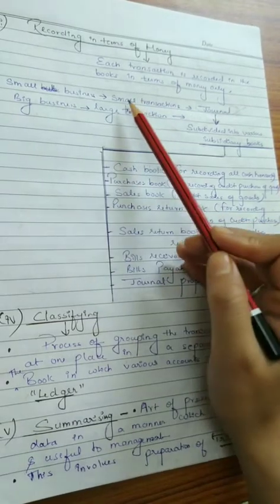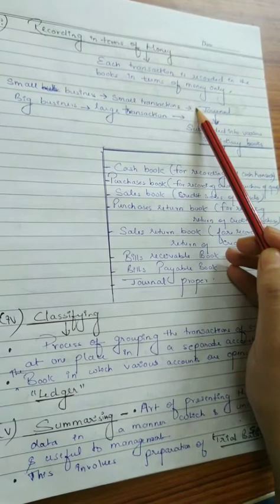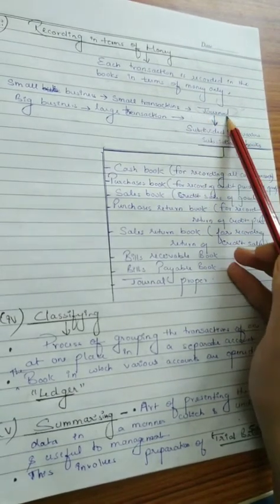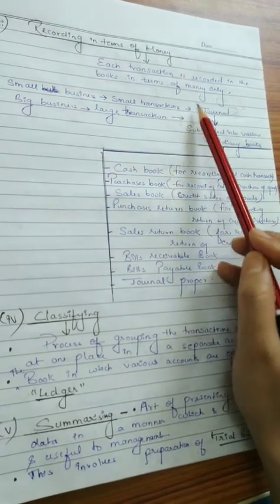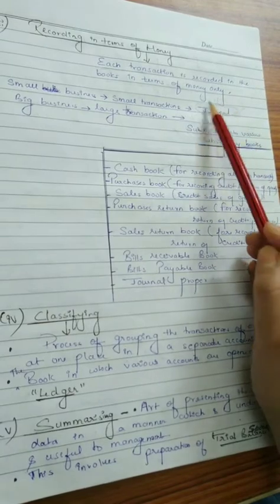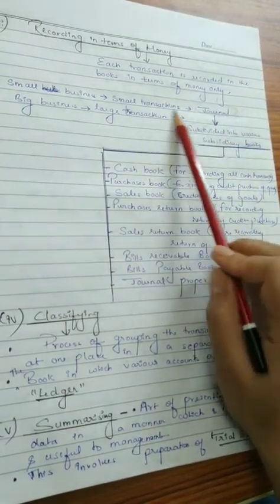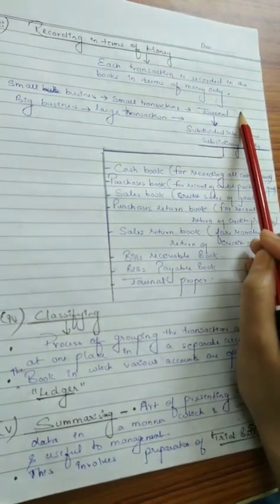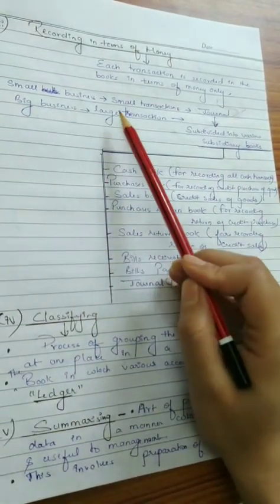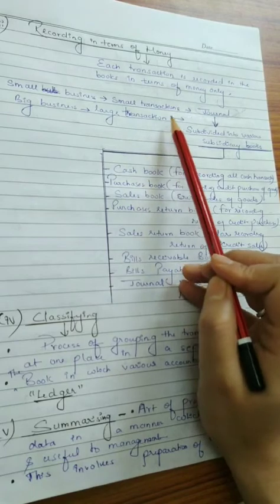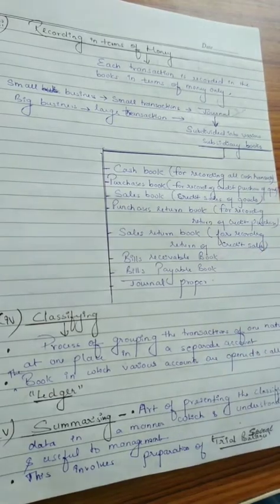In small businesses where the number of transactions is quite small, all the transactions are recorded in a book called journal. Journal is also known as the book of original entry — all business transactions are first recorded in the journal. But in big businesses where the number of transactions is quite large, the general journal is subdivided into subsidiary books.